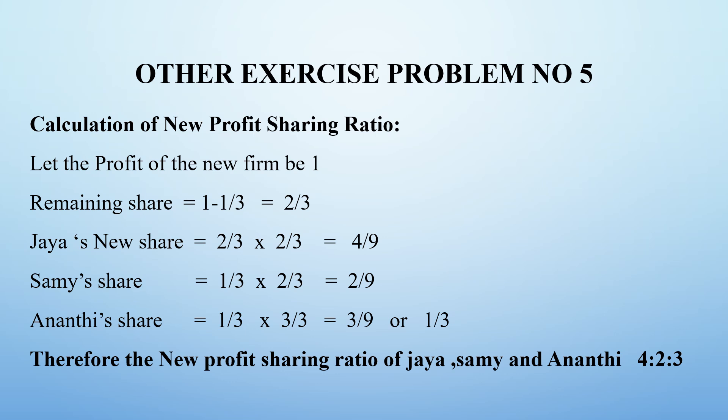In 1/3, the old ratio multiplied by 2/3 (the remaining share) gives us 2/9 for Sami. For Anandhi's share, 1/3 into 3/3 gives us 3/9. Since all denominators are 9, we keep it as 3/9. So the new profit sharing ratio of Jaya, Sami, and Anandhi is 4:2:3.